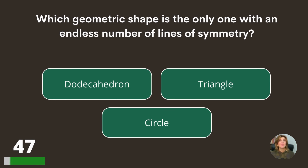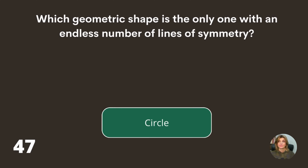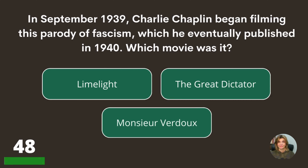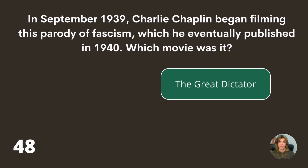Which geometric shape is the only one with an endless number of lines of symmetry — the dodecagon, the triangle, or the circle? The circle. In September 1939, Charlie Chaplin began filming a parody of fascism, which he eventually released in 1940. Which movie was it — Limelight, The Great Dictator, or Monsieur Verdoux? The Great Dictator.